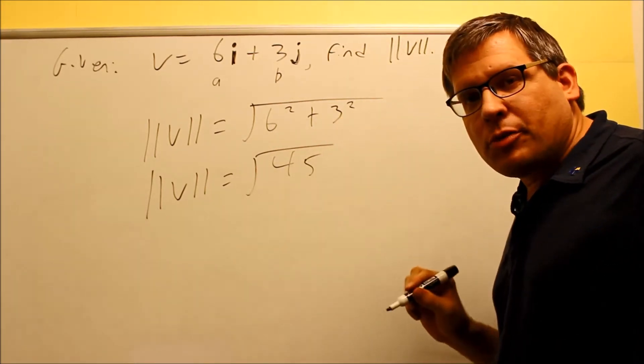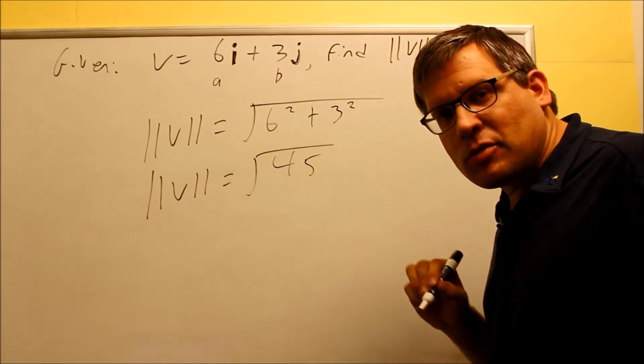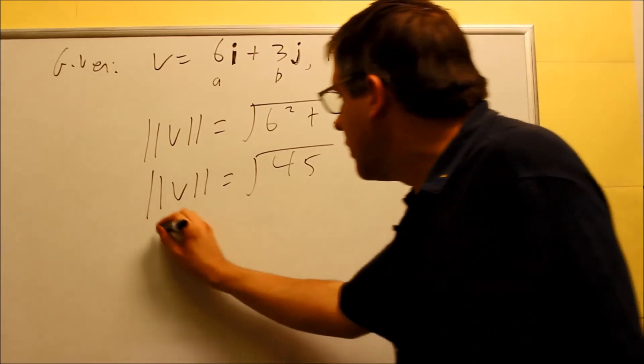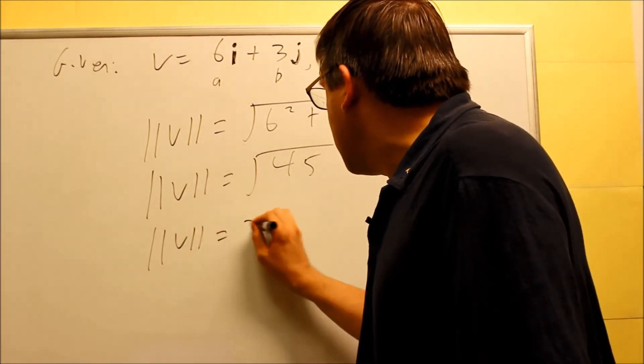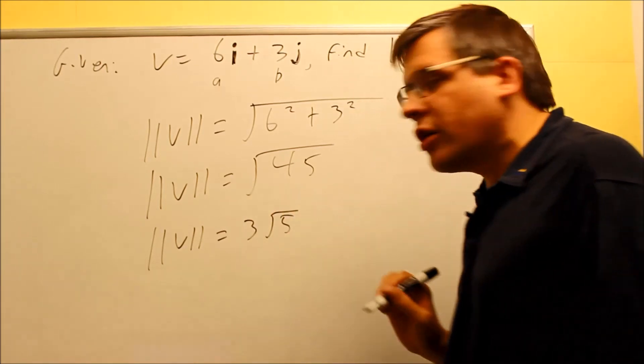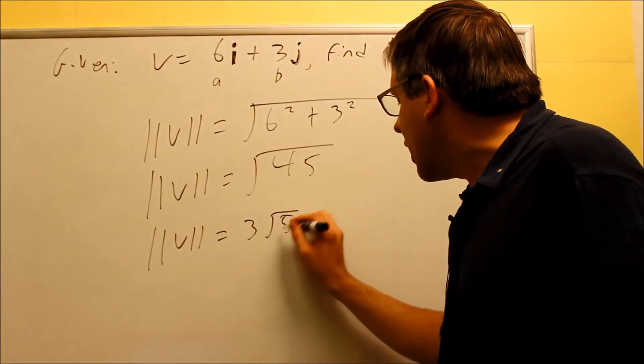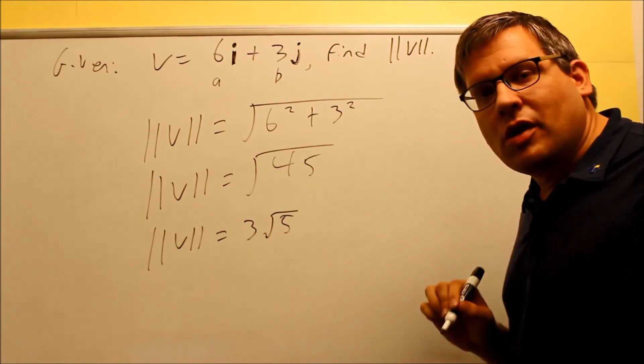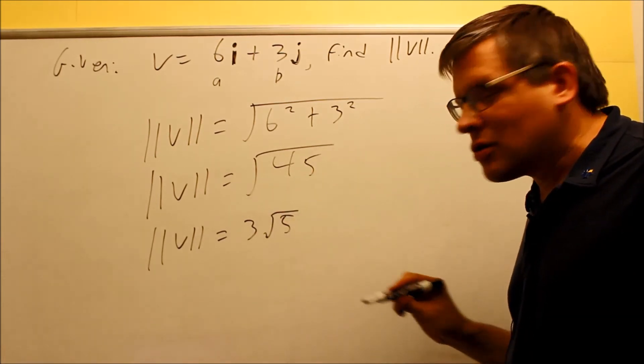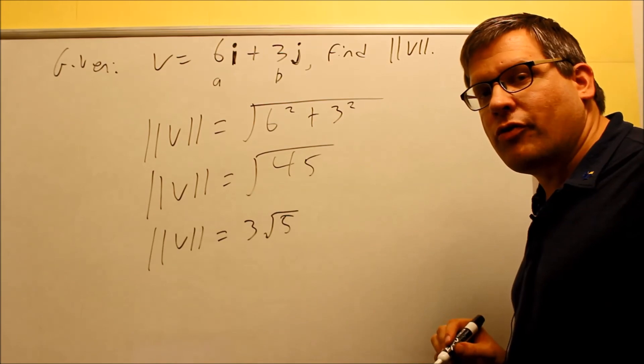The square root of 45 can be broken down further. That can be written as 9 times 5. The square root of 9 is 3. So if you can break down the square root more, you do want to do that, because especially if you're using an online homework grading system, it's going to expect your answer to be broken down like this. So this would be your final answer: 3√5.